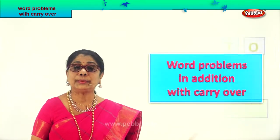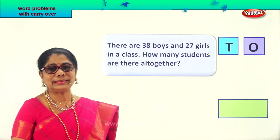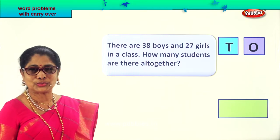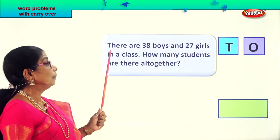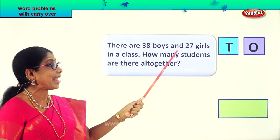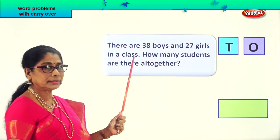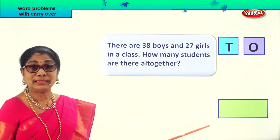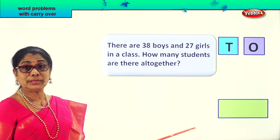First we need to read the problem, then put the numbers down and arrange it correctly before we add. Let's read the first problem given to us. There are 38 boys and 27 girls in a class. How many students are there altogether? We're supposed to find out the total number of students.